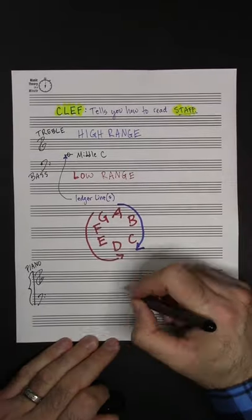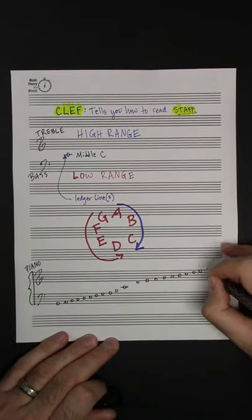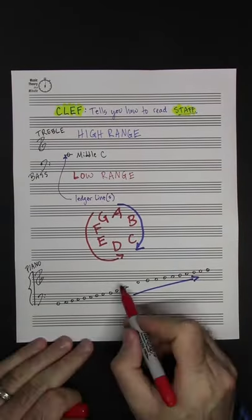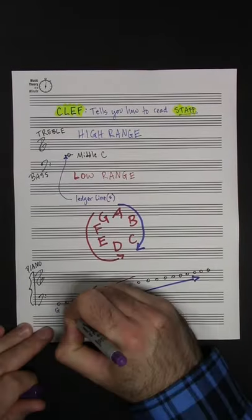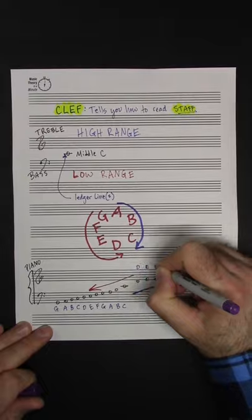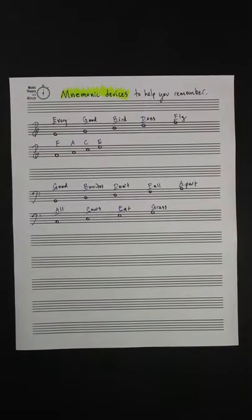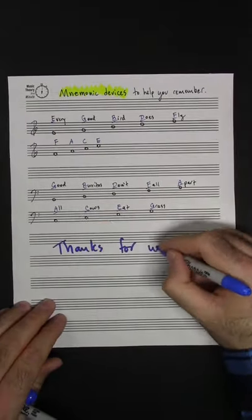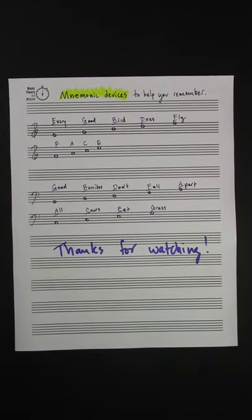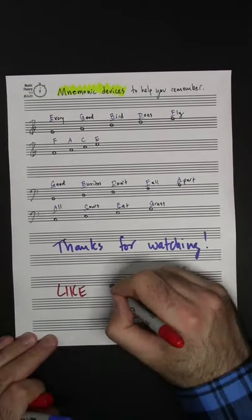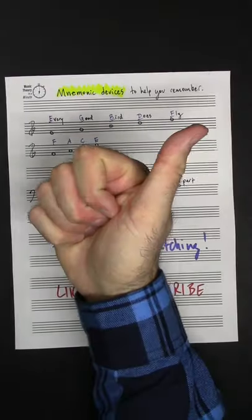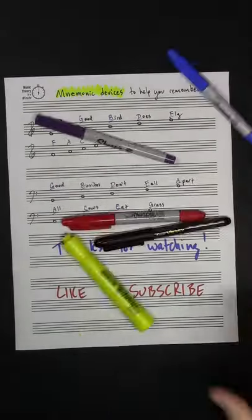Middle C sits on the ledger line directly below the treble clef staff and directly above the bass clef staff. I'll include a few mnemonic devices to help you remember the note names in the description below.